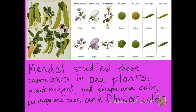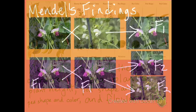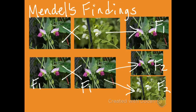Mendel studied these characters in pea plants: plant height, pod shape and color, pea shape and color, and flower color. Mendel studied plants that had purple flowers and crossed them with plants that had white flowers. He noticed all the offspring had purple flowers. In that first generation, he took two plants that had purple flowers, crossed them, and ended up with plants that had both purple flowers and white flowers. So the characteristic for white flowers was hidden in the first generation but showed up in the second generation.